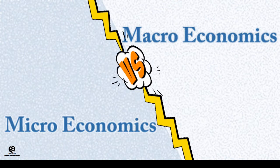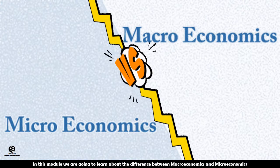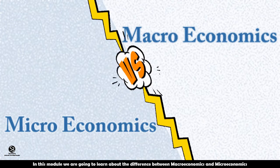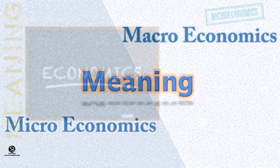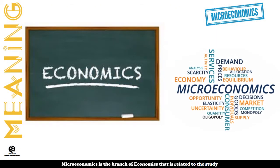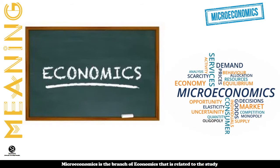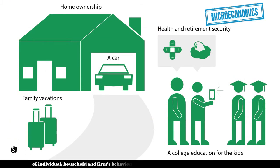On this video, how to understand Micro-Economics and Macro-Economics. Micro-Economics is the study of individual — the study of individual household and firm behavior, and the allocation of resources.